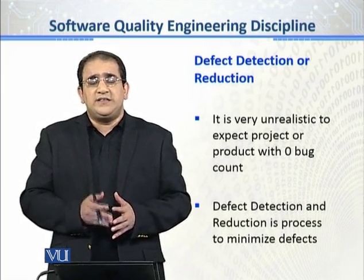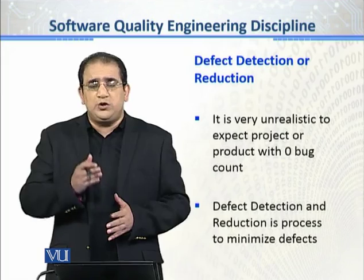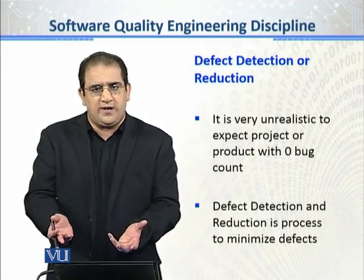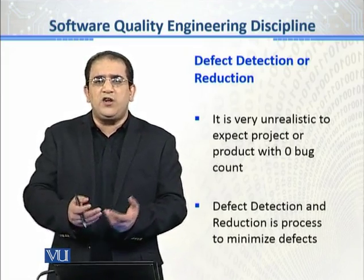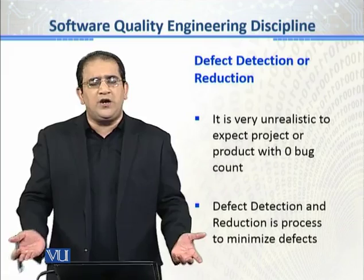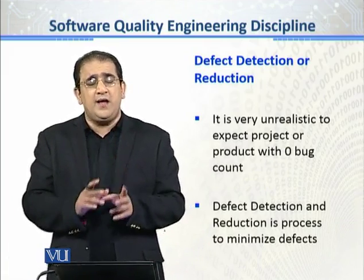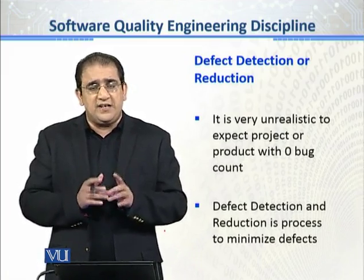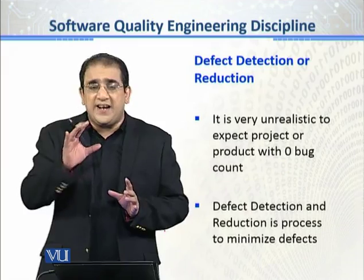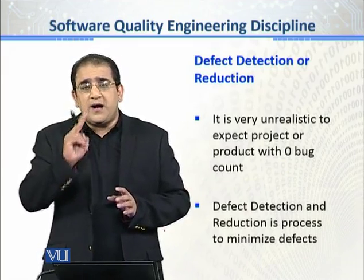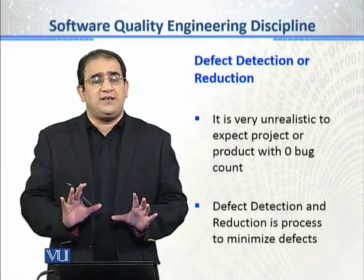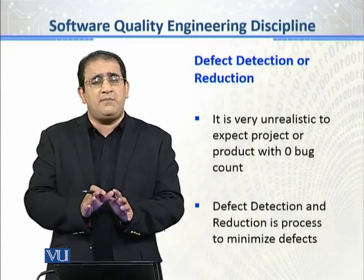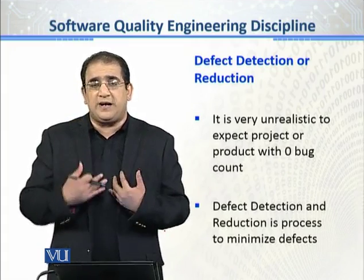A blocker means your QA stops — they say 'we cannot proceed further.' If you are not able to log in and all your functionality is based on login, then you are nowhere. So the point is: why is bug prevention or bug reduction important? Our target is not reducing the bug count to zero. This is a reality, a fact that very few people accept.